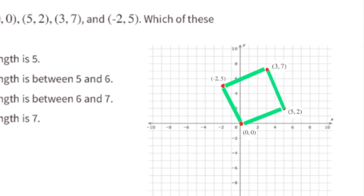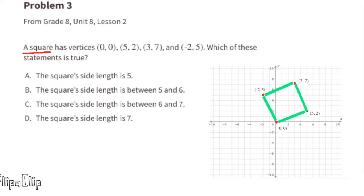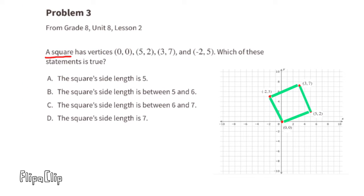Let's use the graph to help us decide if the statements are true. When I took the side length of the square and placed it vertically, I see that it is between 5 and 6 units in length, so statement B is the correct statement.